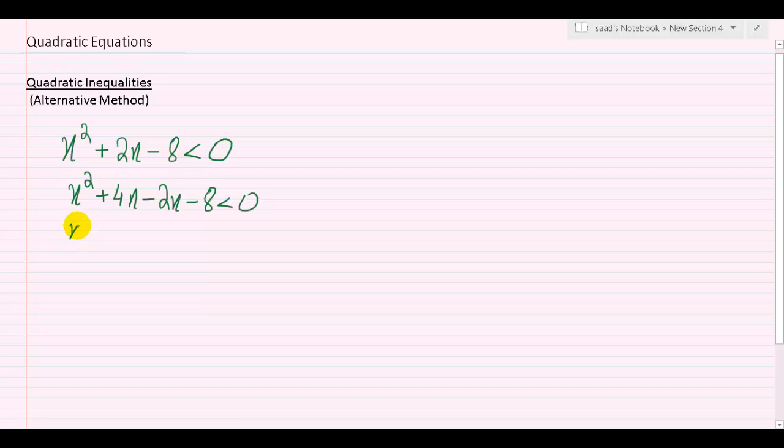In this pair, I can factor out x, so that'll give me bracket open, x plus 4. In this pair, I can factor out minus 2, so that'll also give me x plus 4 inside the brackets, less than 0.